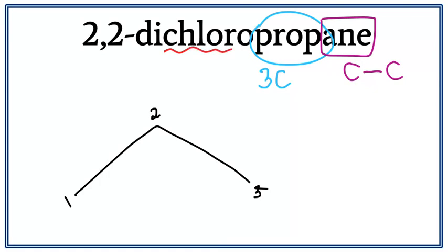We have a chloro here. Chloro just means there is a chlorine attached to the chain. Di here tells us that there are two chlorines attached.